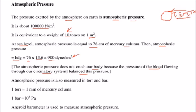Atmospheric pressure is also measured in terms of torr and bar. One torr is 1 millimeter of mercury column and one bar is 10 to the power 5 Pascal. Aneroid barometer is used to measure the atmospheric pressure.